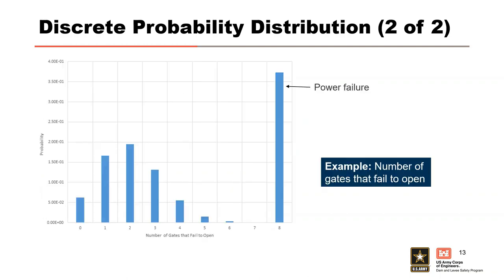An example of a discrete probability distribution would be the number of gate failures — you cannot have 0.3 gate failures because a gate either fails or does not, so it must be a whole number. Discrete distributions are defined by x values that are countable.